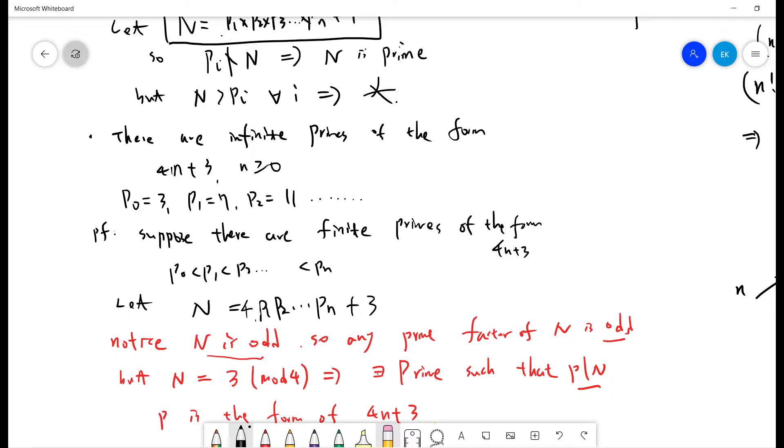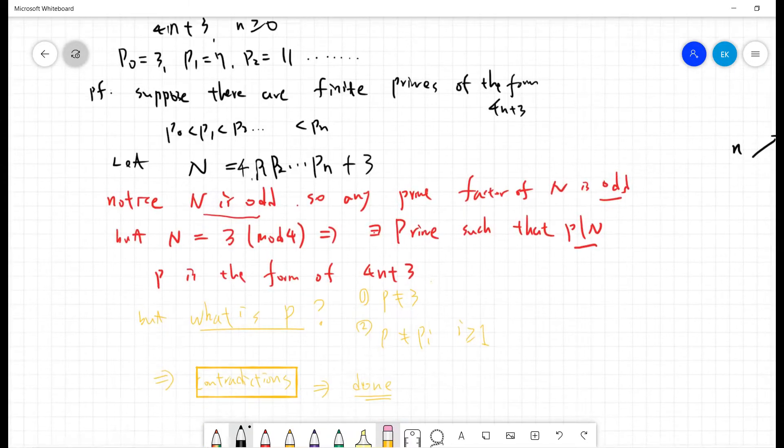The reason is that every odd prime factor can only be 4n plus 1 or 4n plus 3. But 2 times a 4n plus 1 multiple will get 4n plus 1, and 2 times a 4n plus 3 multiple will get 4n plus 1. So since it's 4n plus 3, there must exist some prime factor such that p divides N, and p is the form of 4n plus 3.